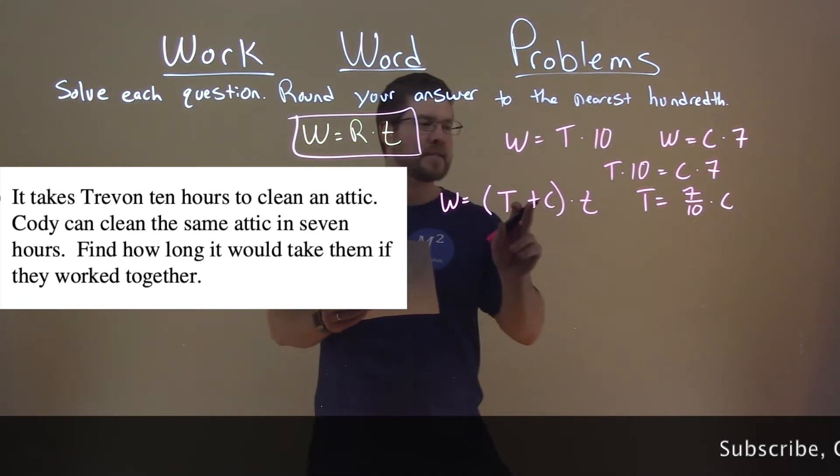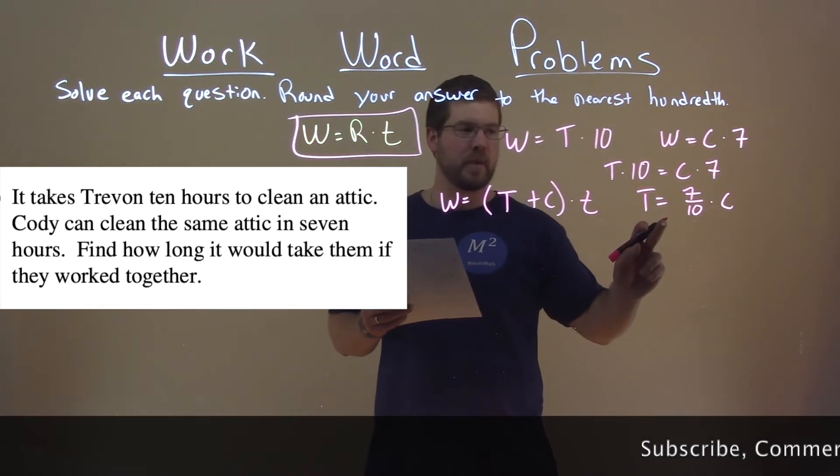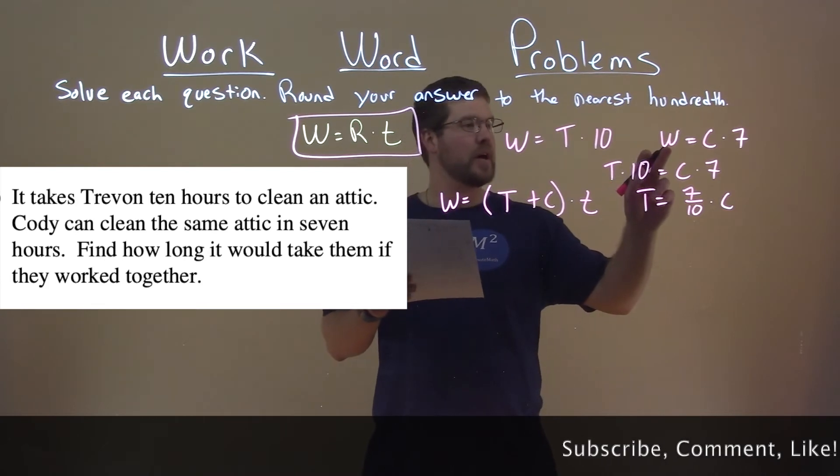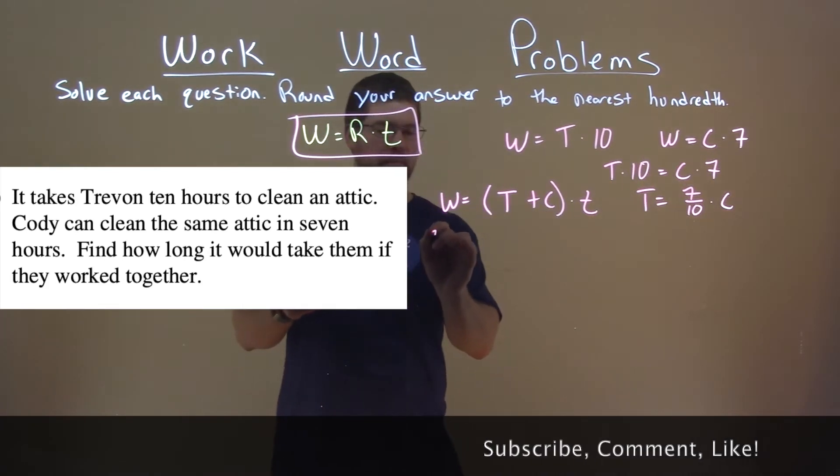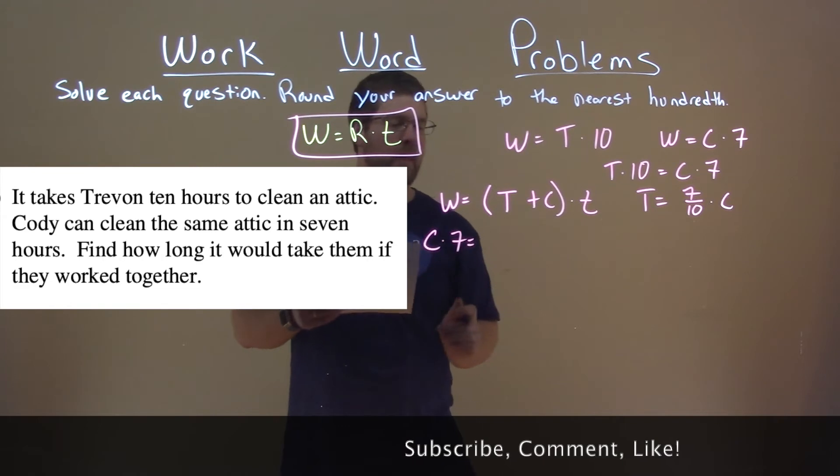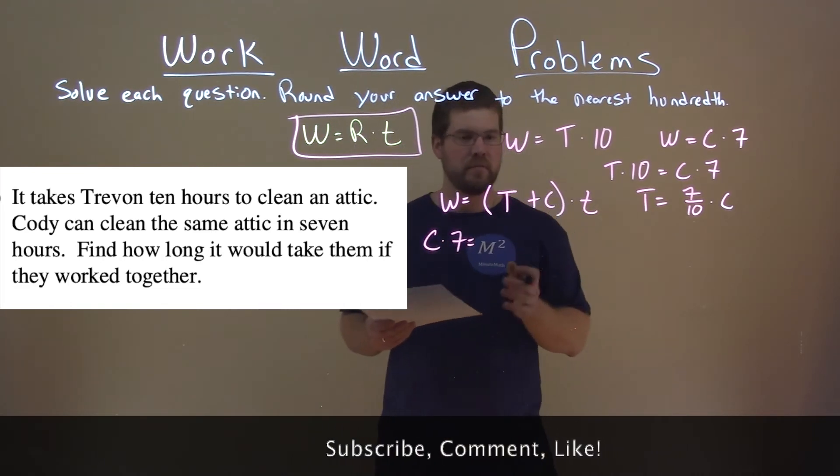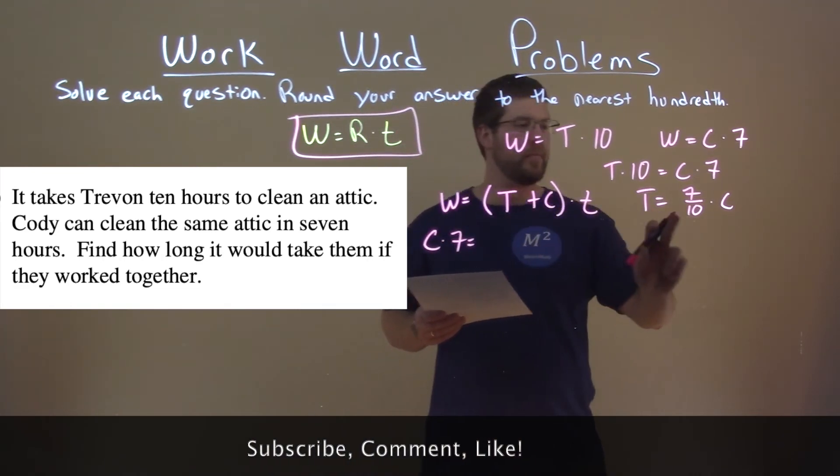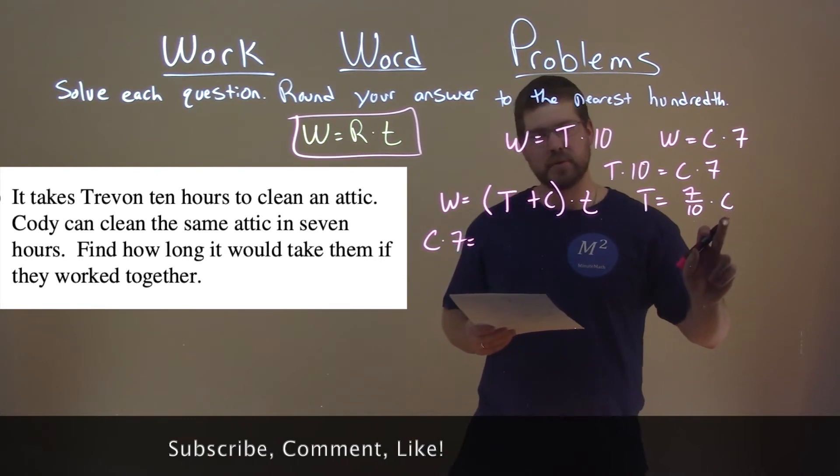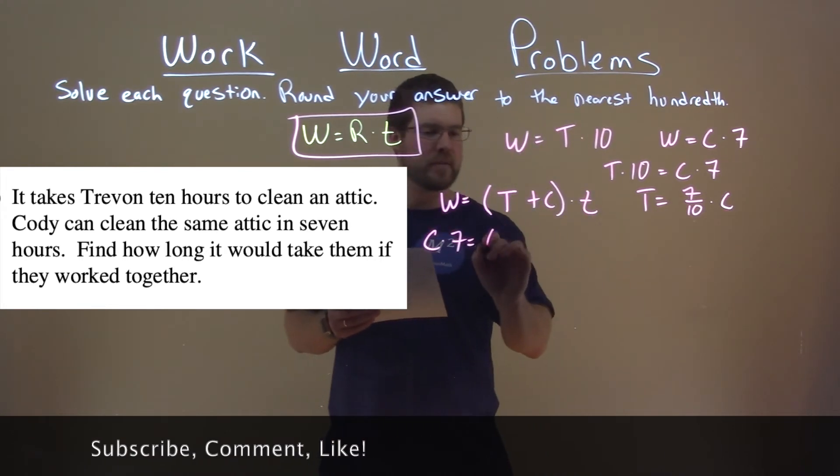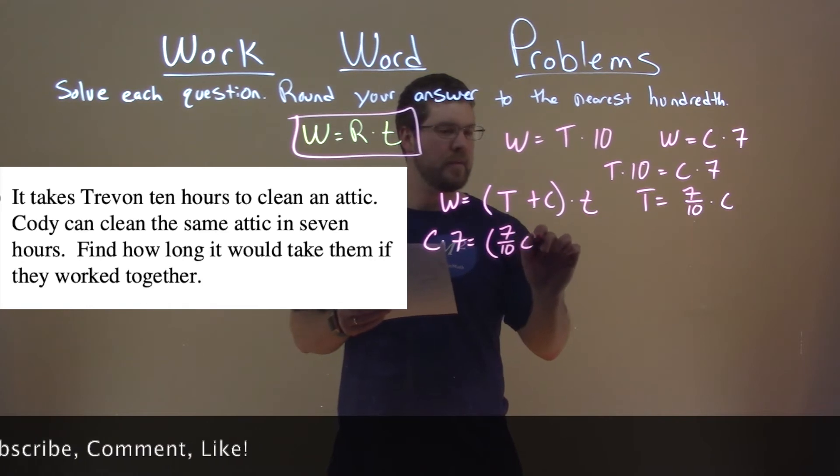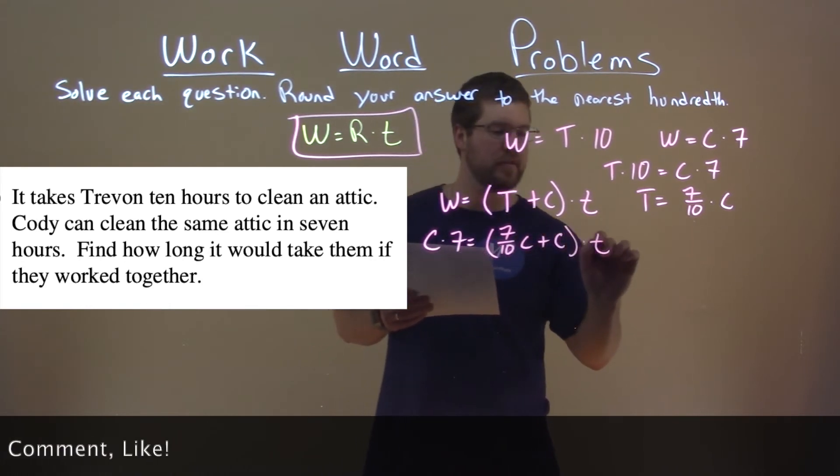And now we're going to substitute values that we know. We know that here W is equal to C times 7 and the whole goal is to try to get rid of some variables here. T we know is seven tenths times C, which we set up earlier.